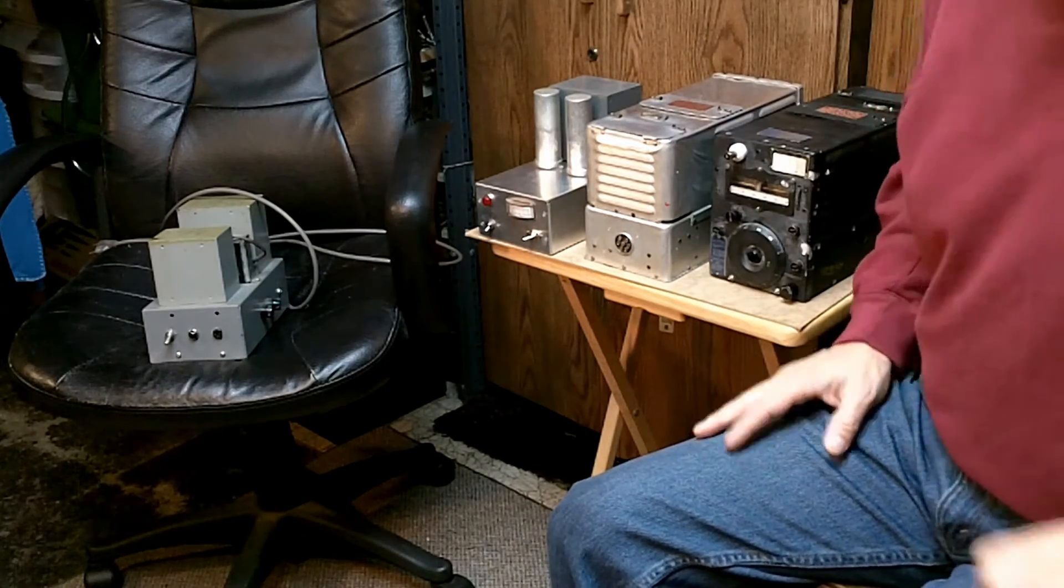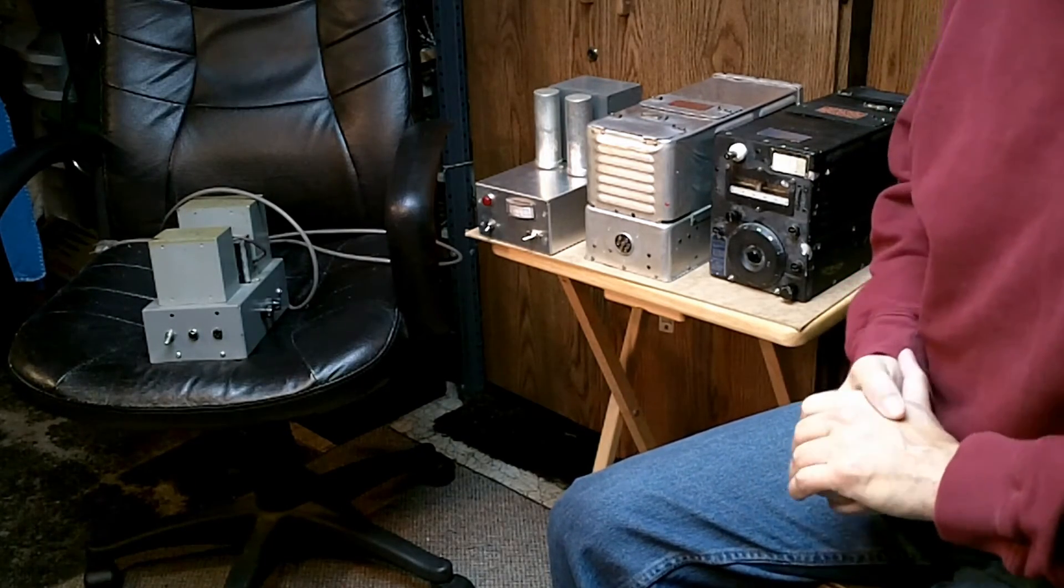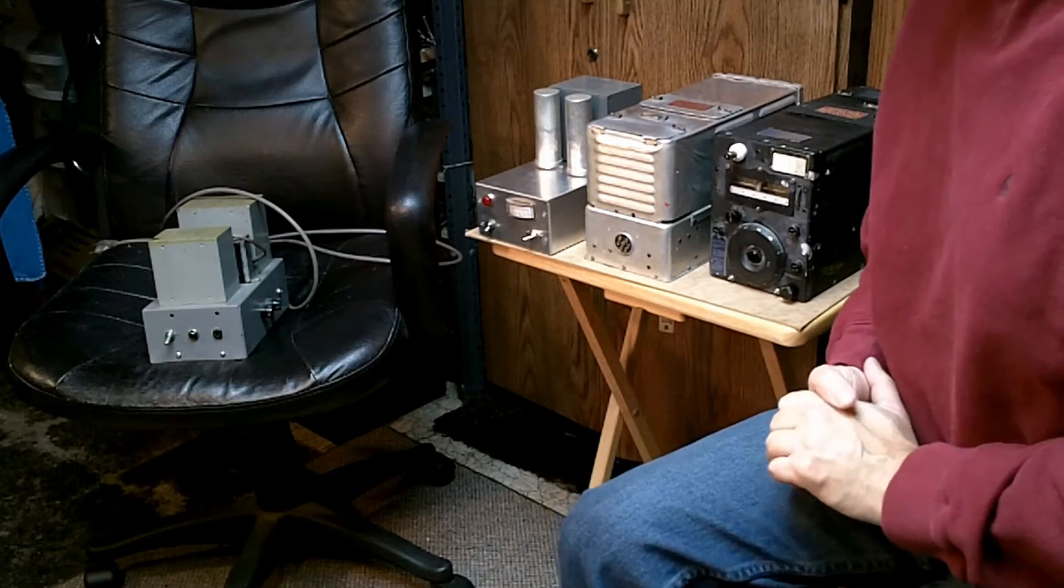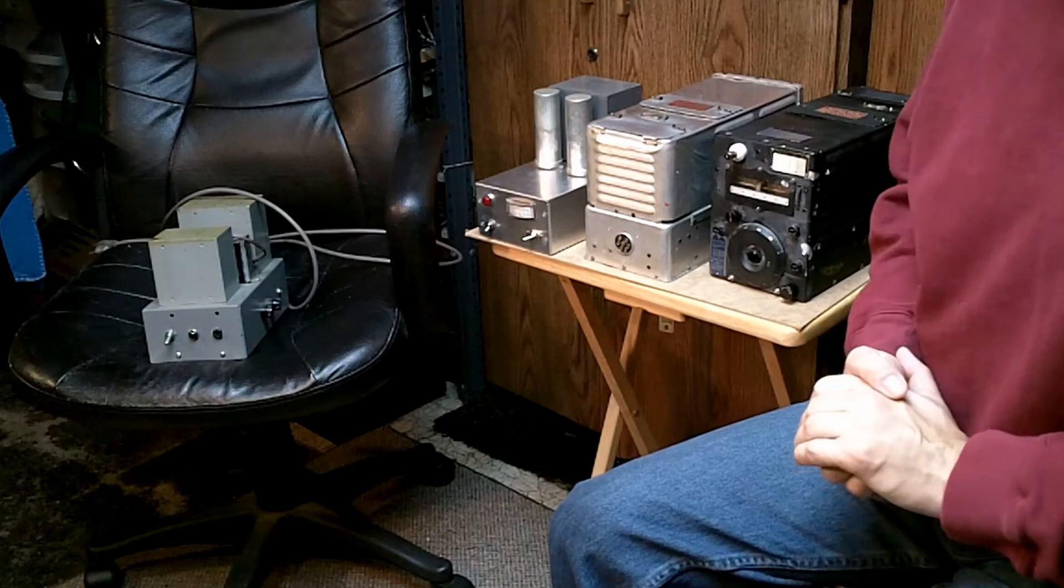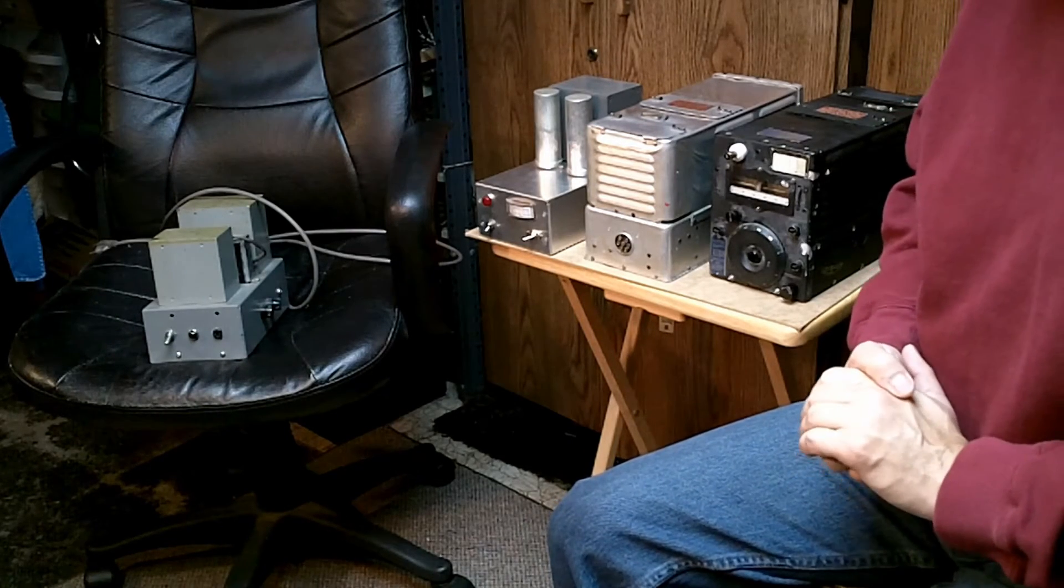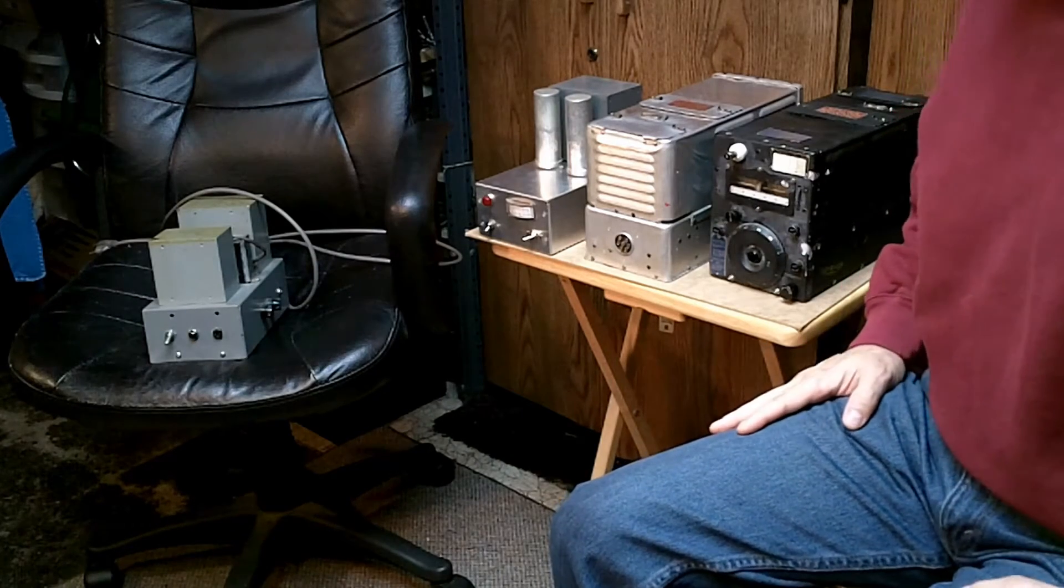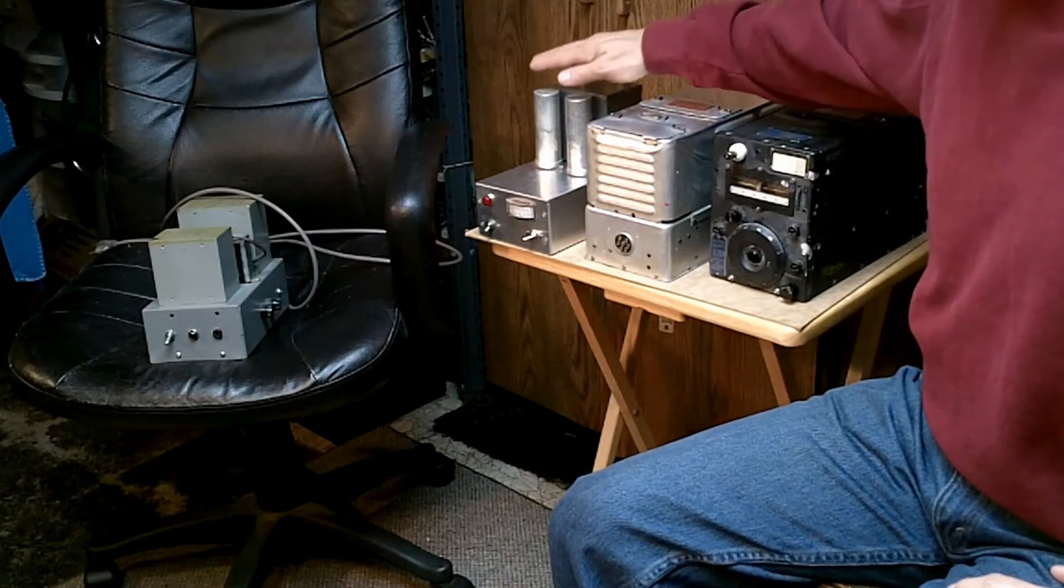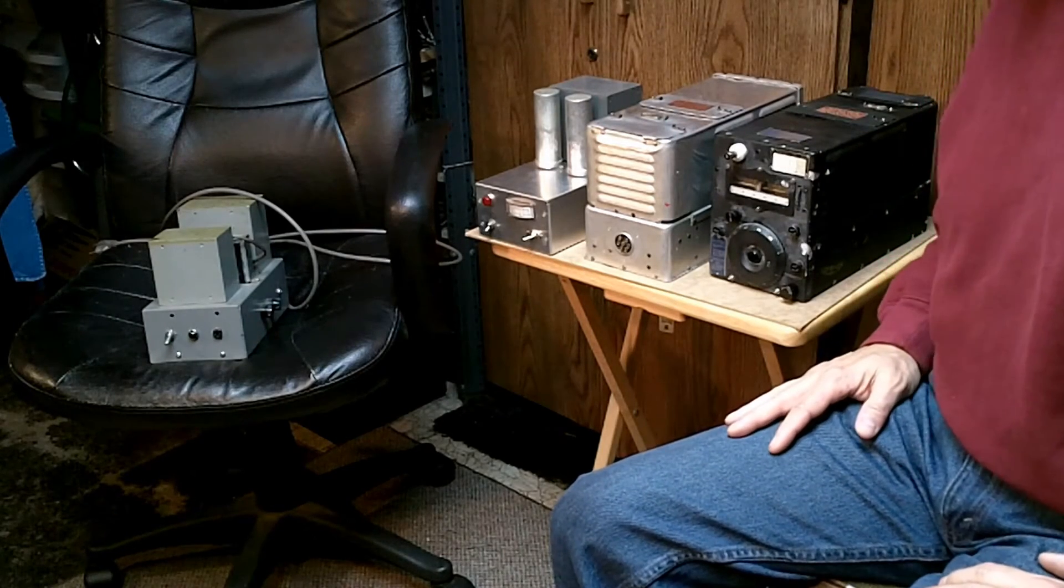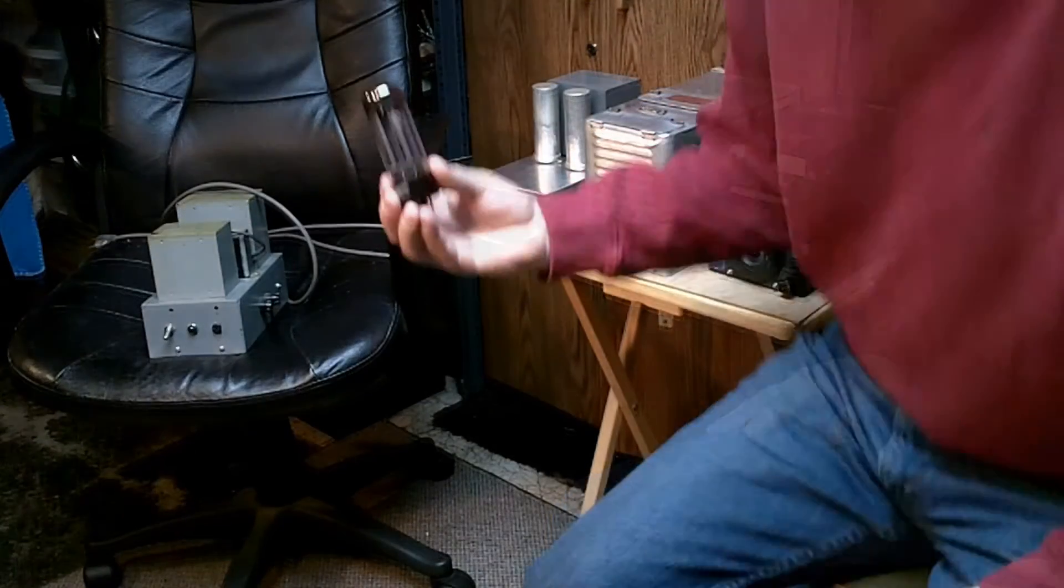The other advantage we have today is high value capacitors. Instead of using 4 and 8 microfarad capacitors at 450 volts, we can get our hands on 150 or 200 microfarad capacitors at 300 or 400 volts and we can stack them up. And by using equalizing resistors, we're able to make a significantly larger capacitance. This also improves the filtering and the regulation compared to the old days when they had to use the smaller oil filled and older electrolytics.